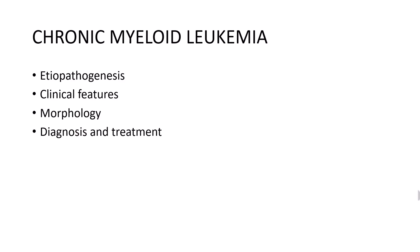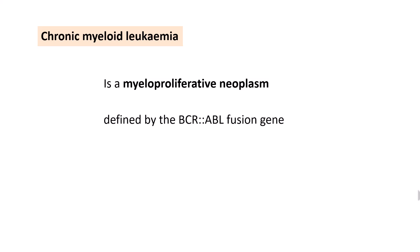So, in the next 10 to 15 minutes, let us learn about the etiopathogenesis, the clinical features, the morphological features, the diagnosis and treatment of chronic myeloid leukemia. Chronic myeloid leukemia, as we all know, is a myeloproliferative neoplasm which is defined by the BCR-ABL1 fusion gene, specifically the BCR-ABL1 fusion gene.